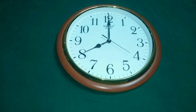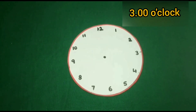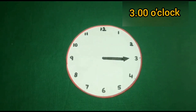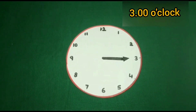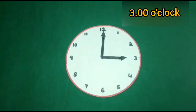Now students, let's learn to make the hour and minute hand to show the given time. First we will show 3 o'clock. To represent 3 o'clock, the smaller hour hand will point towards 3. And we know when the minute hand is on 12 the time is exactly the number where the hour hand is pointing, so the minute hand will point towards 12.